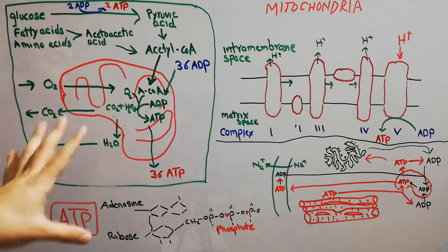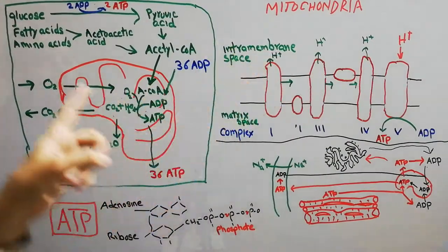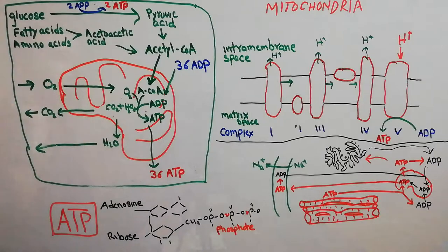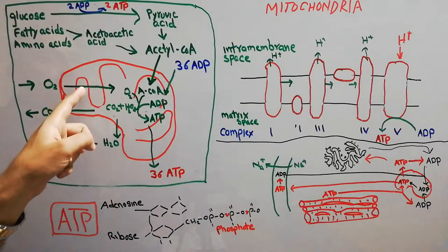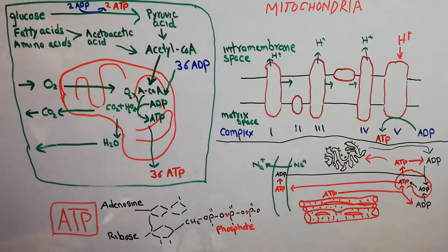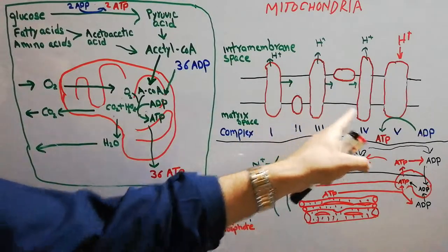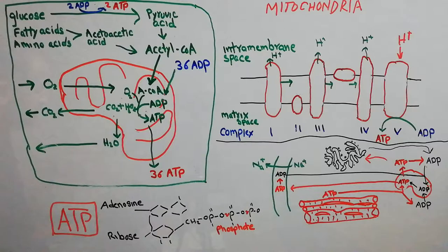How exactly this energy is released is shown here. This is the intramembrane space — the space between the two membranes of the mitochondria — and this is the mitochondrial matrix. In this region we have several complexes: complex one, complex two, complex three, complex four, and complex five. These complexes constitute the electron transport chain and are made of NADH, cytochrome c, and ATP synthase.